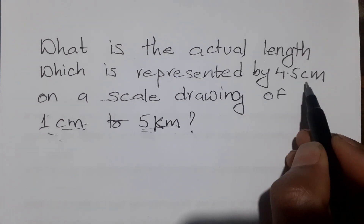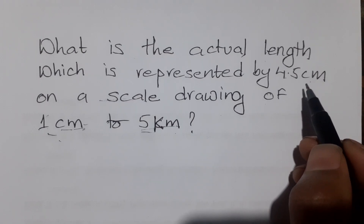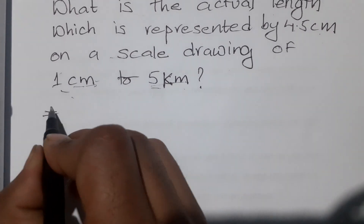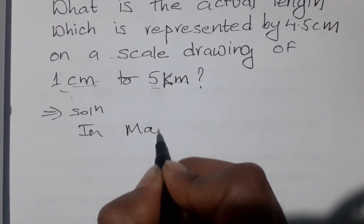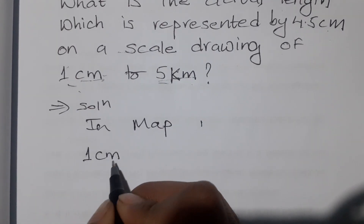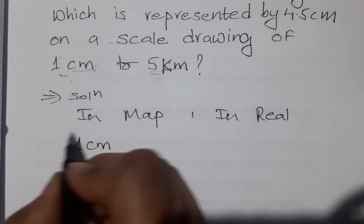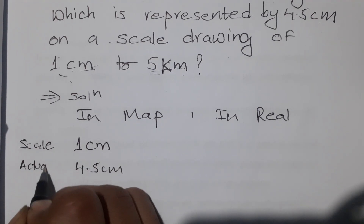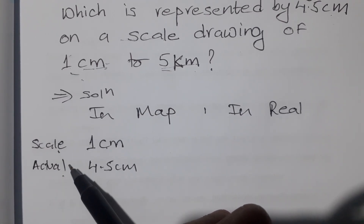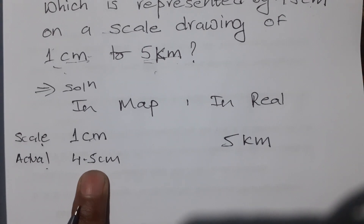This is a centimeter on the map. It is definitely a kilometer in the real world. The map distance is 4.5 centimeters. One centimeter equals 5 kilometers. In the real world, this is the actual measurement. The scale is 1 cm = 5 km, and the map measurement is 4.5 cm.